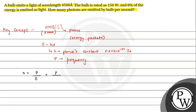Now, energy of a photon is h times nu, as we discussed. This can also be written as h times c over lambda. So we can write: number of photons emitted per second equals P times lambda divided by h times c.